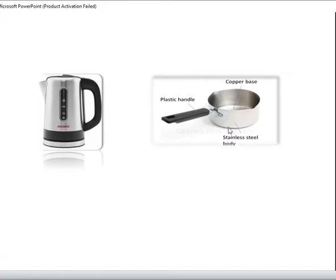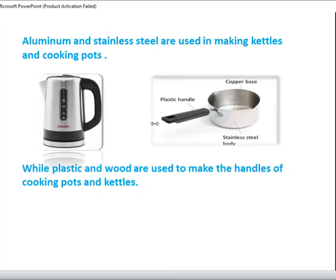Kettles and cooking utensils or cooking pans are made up of aluminium or stainless steel because they are good conductors of heat — they transfer heat from the fire to the food inside or heat the water in the kettle. While the handles are made of plastic or wood because they are bad conductors of heat.